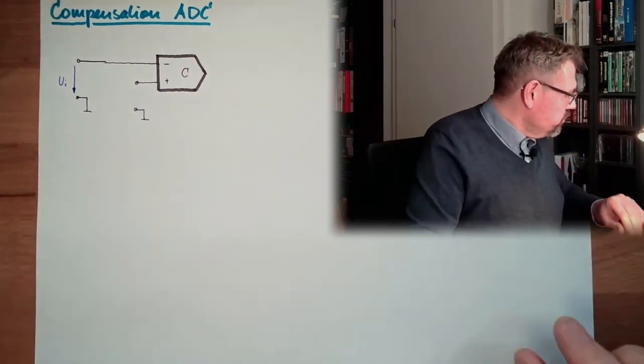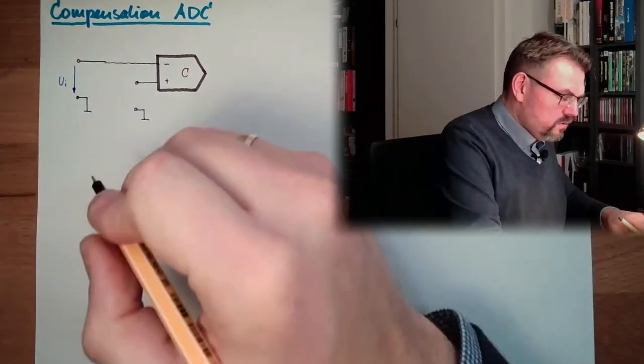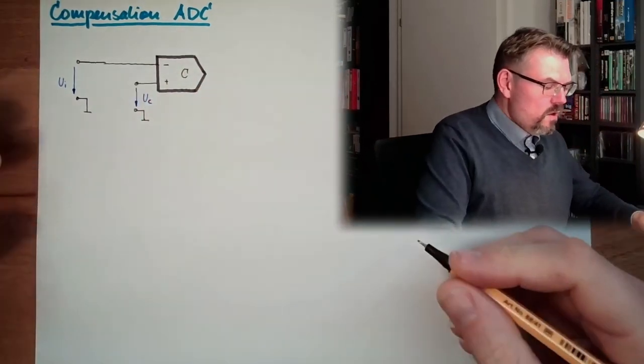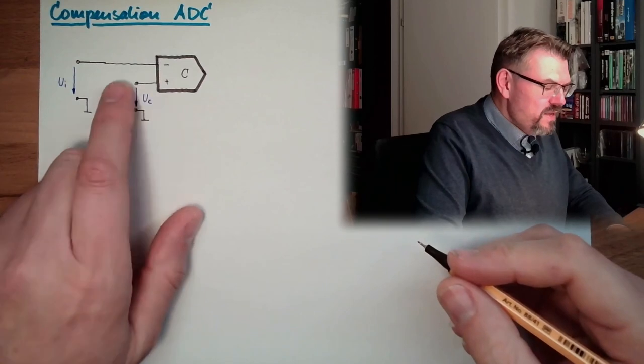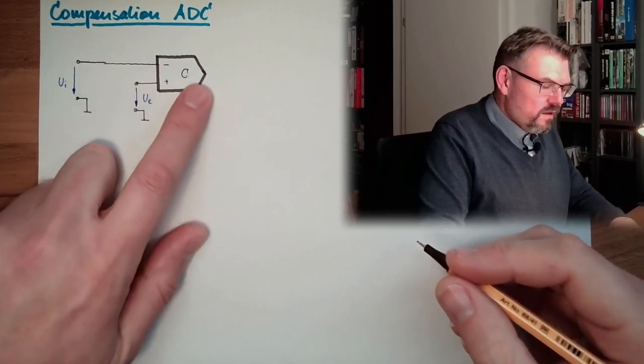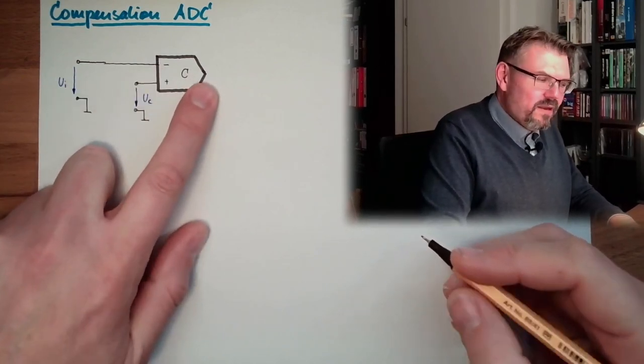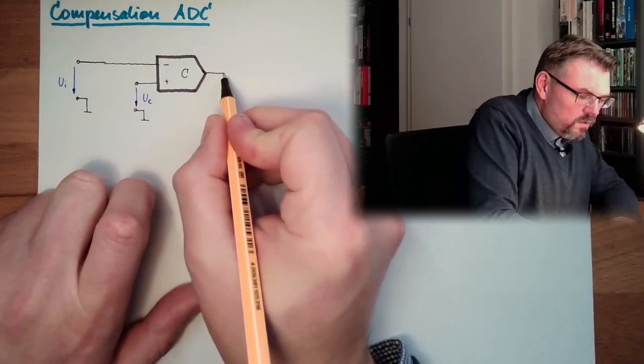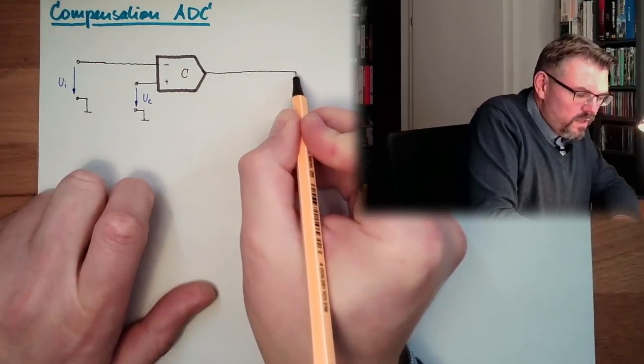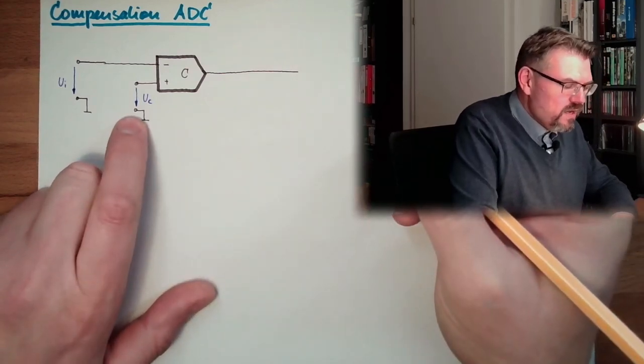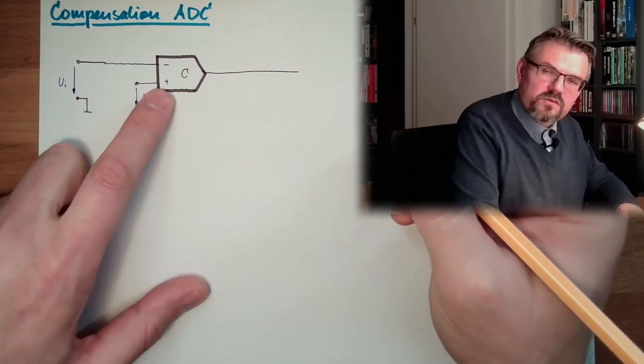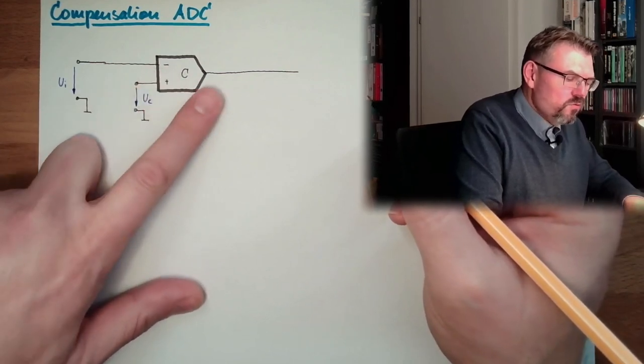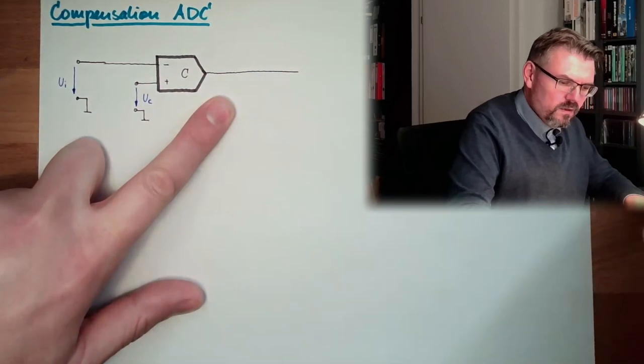A voltage, a comparison voltage. Whenever Uc is bigger than Ui, the comparator will get a high as output. So the output will be 1, logically 1, if we do have a bigger Uc than Ui. Because Uc is connected to plus and Ui is connected to minus. So plus must be higher than minus to make a 1 here.